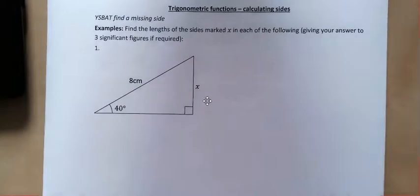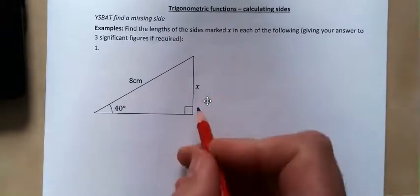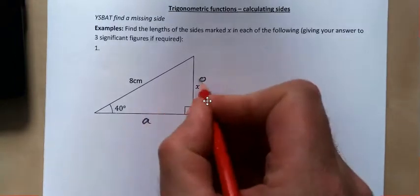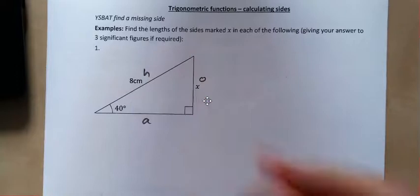Same format as before. The first thing we always do is label our three sides. So this one's the adjacent. This one's the opposite. And this one is the hypotenuse. You should be getting comfortable with doing that and be able to do that.